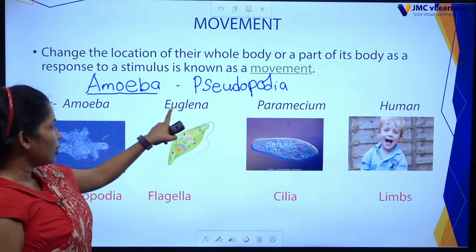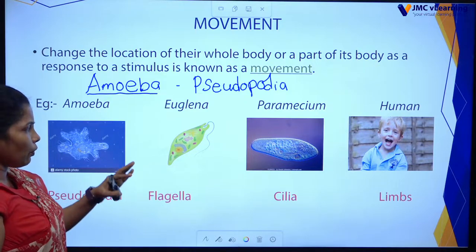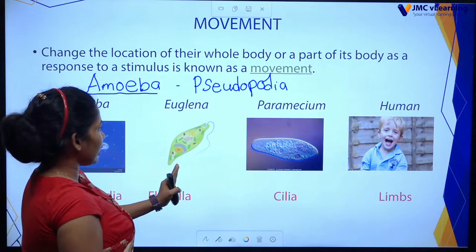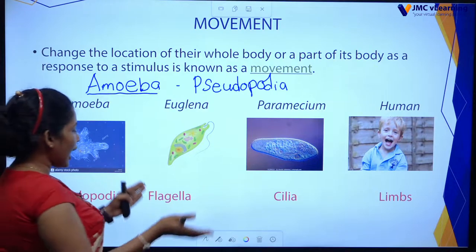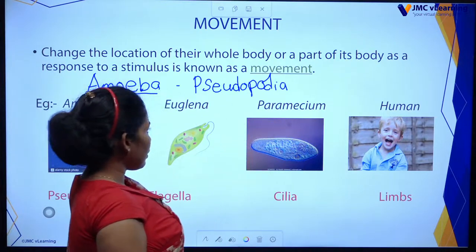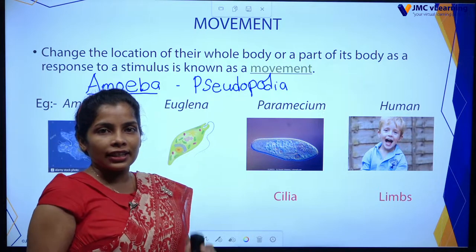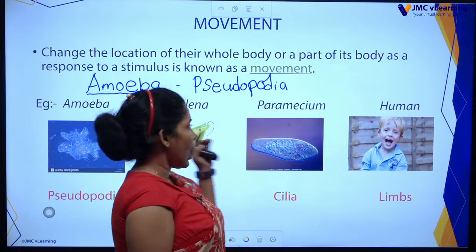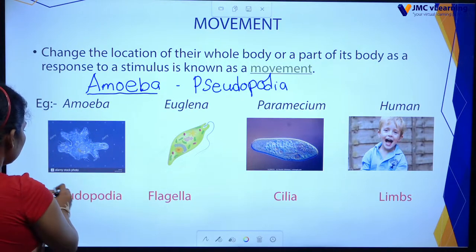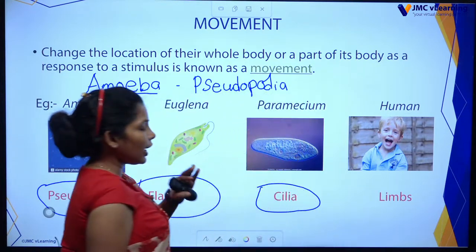Next we are moving to Euglena. You can see the shape and features of Euglena. Euglena shows appendages — what kind of appendage? It is a flagella. Now moving to Paramecium. Amoeba, Euglena, Paramecium — all these animals belong to the category of Protista. Their appendages are: pseudopodia for Amoeba, flagella for Euglena, and cilia for Paramecium.